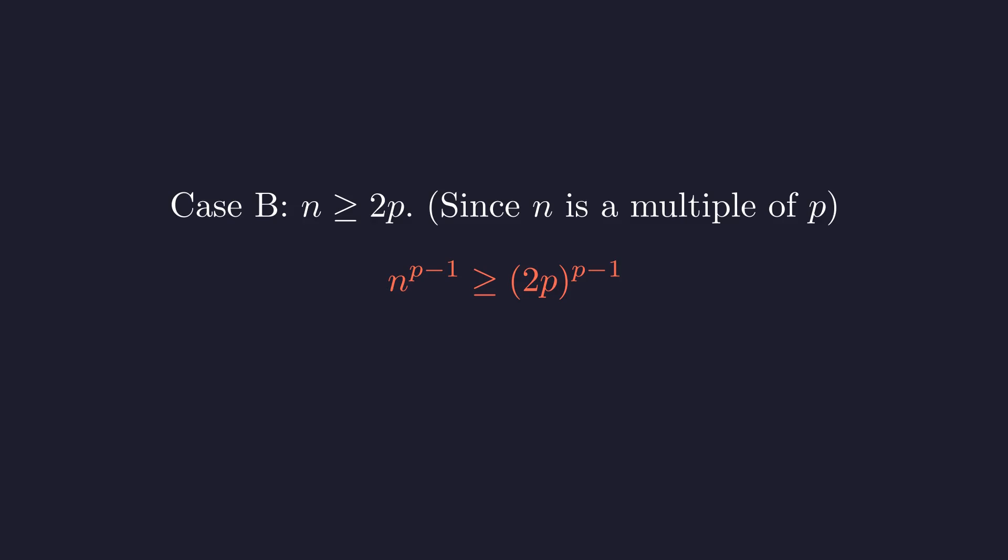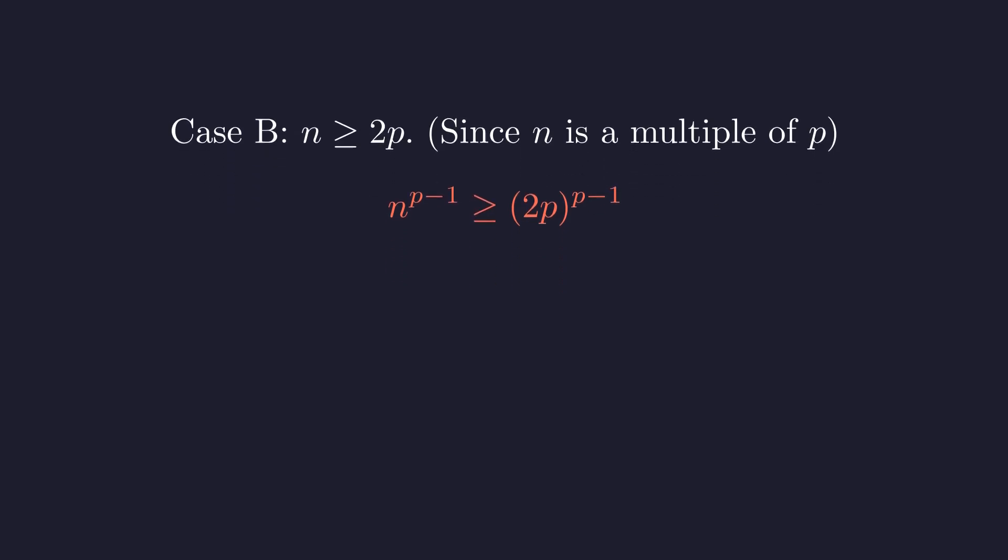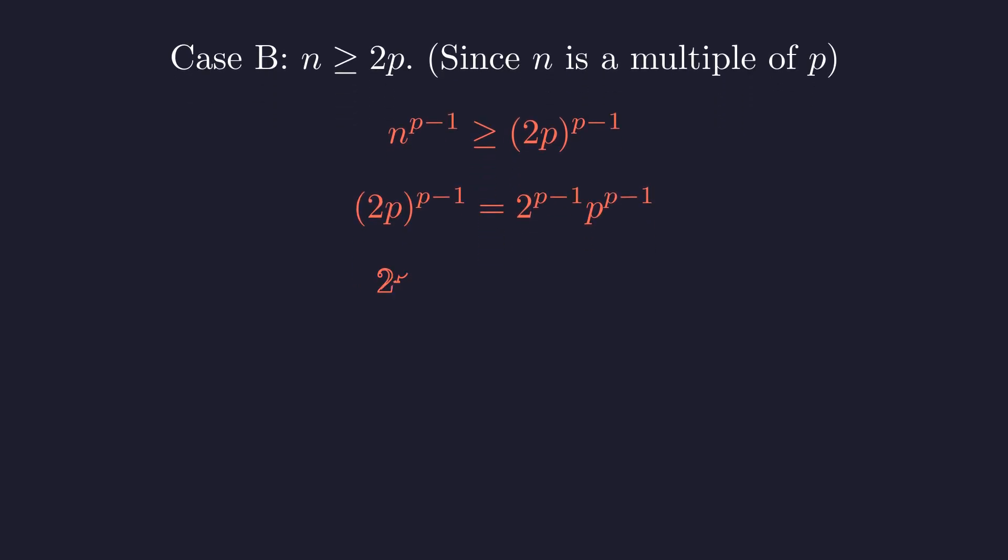Since n is at least 2p, n to the (p-1) must be at least (2p) to the (p-1). Using exponent rules, we can distribute the power. For any p of 3 or more, the factor 2 to the (p-1) is greater than 1, so this term is strictly larger than p to the (p-1).